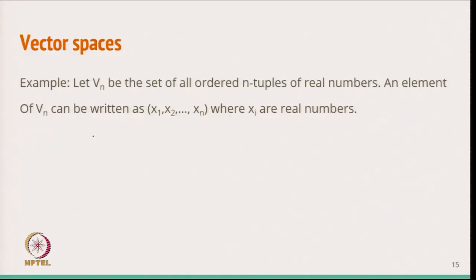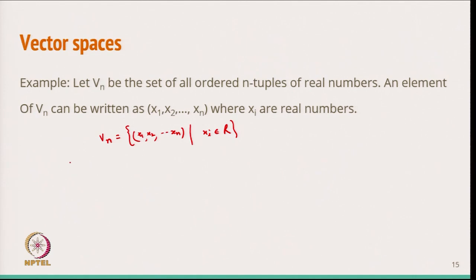In the previous lecture, we started with Vn as the n-tuple. Vn is a space that contains elements like x1, x2, ..., xn, where each xi belongs to the real line. Now we want to show that this makes a vector space, meaning we have to satisfy all the properties related to vector spaces. First, I will define vector addition and scalar multiplication in this case.